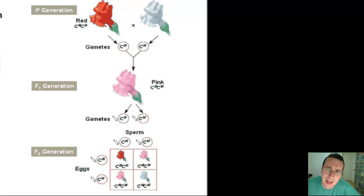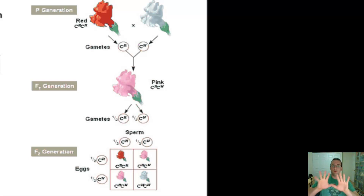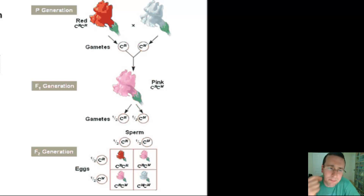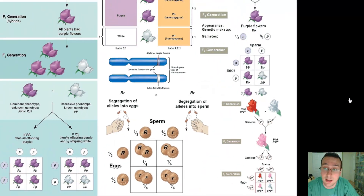Who says a pink flower actually represents incomplete dominance? If you look carefully inside the flower, you might realize it's making red and white pigment at the same time, and when you look from far away it just looks pink. But molecularly, it's actually co-dominance — both pigments are being made simultaneously. So whether it's incomplete dominance or co-dominance depends on how closely you look at it.